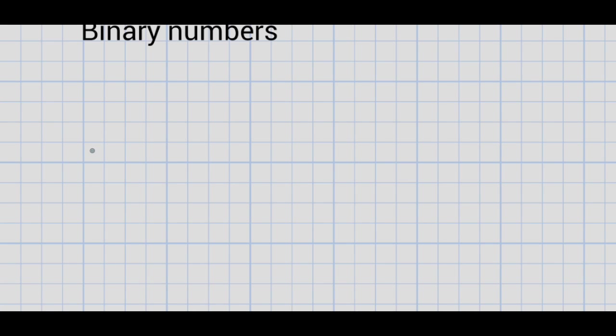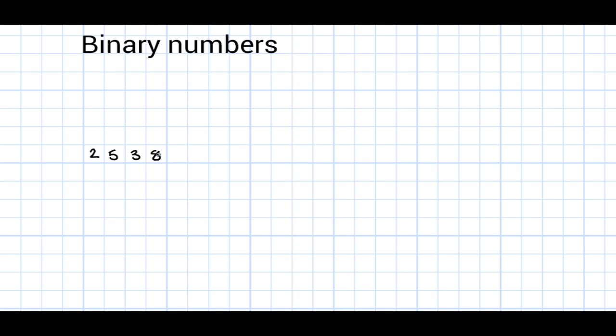In this tutorial, we will talk about binary numbers. I will start off by writing an example number 2538. In elementary school, you were taught that the rightmost digit is the ones place. Moving left, we have the tens place, the hundreds place, and the thousands place.